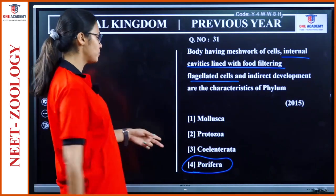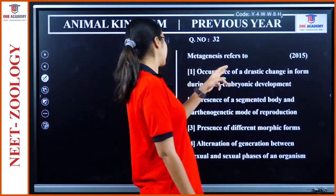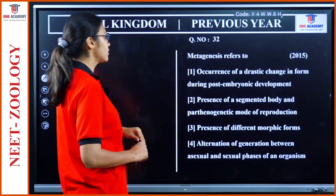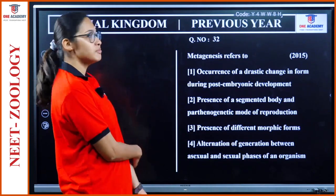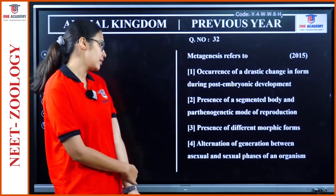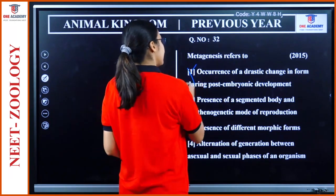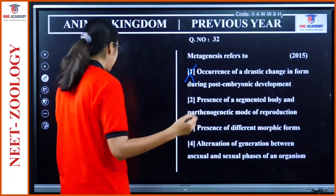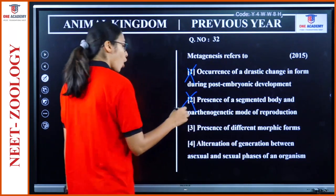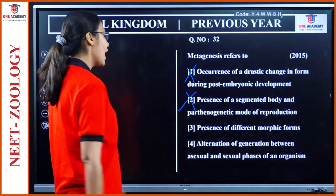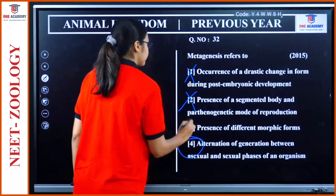Question 32: 'Metagenesis refers to?' Occurrence of drastic change in form during post-embryonic development — no. Presence of segmented body and parthenogenetic mode — no. Metagenesis is the alternation of generation between asexual and sexual phases of an organism. Option 4 is the answer.